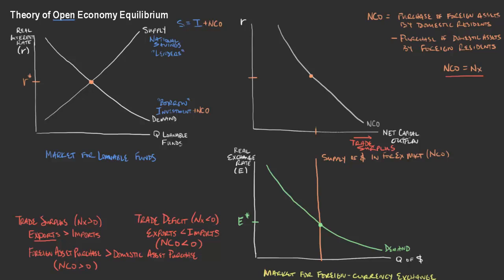On the graph, net capital outflow would be moving in this direction — towards the left — and that area represents a trade deficit. You can think about that net capital outflow relationship as the real interest rate increases or decreases, partly because we'd be closer to a trade deficit or closer to a trade surplus depending on where we are. The next thing we'll think through is how this then works in the market for foreign currency exchange.